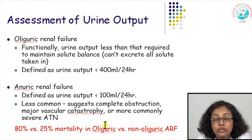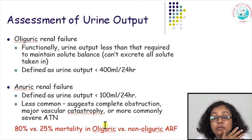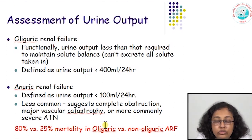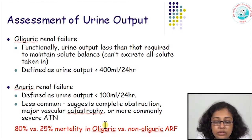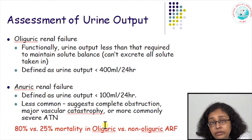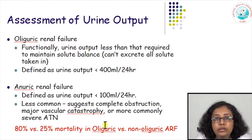Oliguric renal failure is urine output which is less than what is required to clear all the solutes that need to be excreted — urine output less than 400 ml per day in adults is oliguric ARF, while less than 100 ml per day is anuric ARF, which is less common. Non-oliguric versus oliguric is important because non-oliguric ARF fares better, while the mortality rate may be as high as 80 percent in oliguric ARF, especially in the critical care setting.